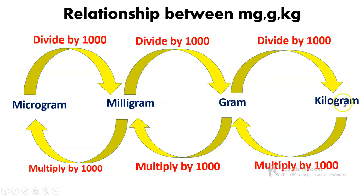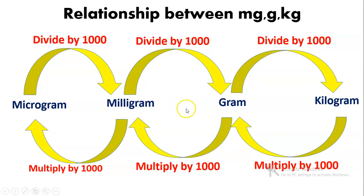The relationship between these units is that 1000 micrograms make one milligram, 1000 milligrams make one gram, and 1000 grams make one kilogram. So each unit differs by a factor of 1000.